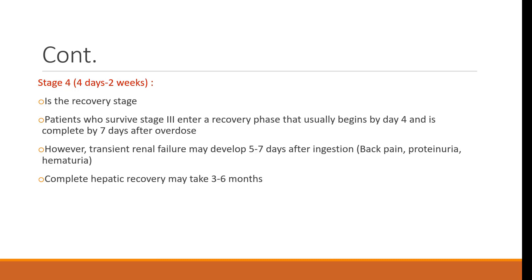Stage 4 — from 4 days to 2 weeks — is the recovery stage. Patients who survive Stage 3 enter a recovery phase that usually begins by day 4 and is complete by 7 days after overdose. However, transient renal failure may develop 5 to 7 days after ingestion, presenting with back pain, proteinuria, and hematuria. Complete hepatic recovery may take 3 to 6 months after ingestion of the first dose.